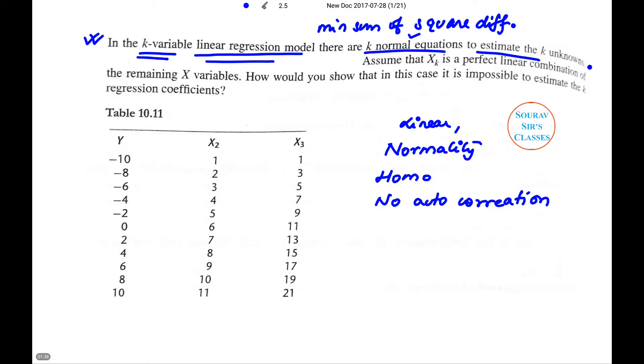Now assume that Xk is a perfect linear combination of the remaining X variables. Now this means that if Xk is a perfect linear combination of remaining X variables, then it means there are k minus 1 equations.